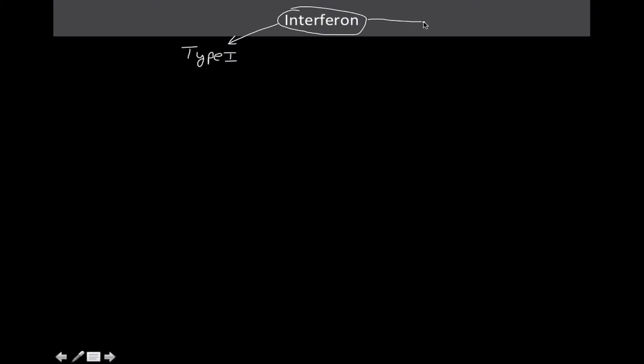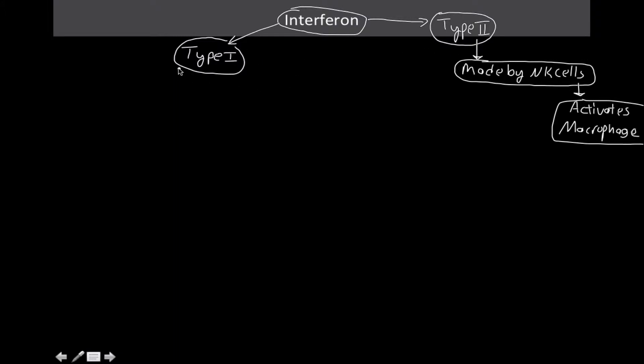We didn't talk about another type, but there is a type known as type 2. Type 2 is not superbly important, but I'll just tell you right now that it's made by natural killer cells. And what it does is it's going to activate macrophages. So the ones that we did talk about that are important are type 1.